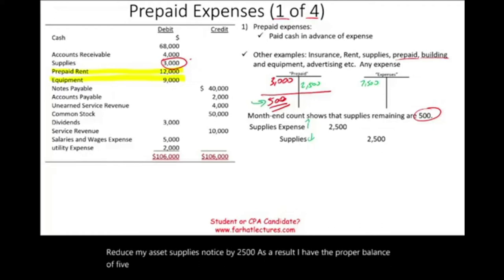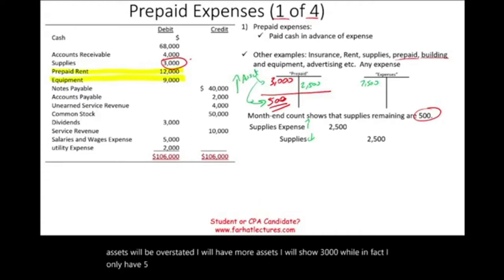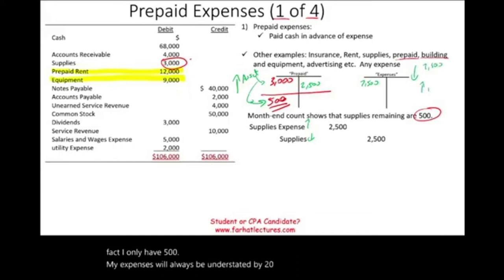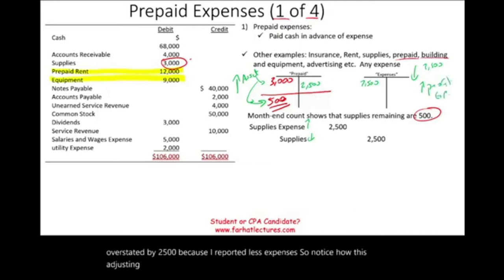What happens if we did not book this entry? Our assets would be overstated — we'd show $3,000 when we only have $500. Our expenses would be understated by $2,500, and as a result, our profit would be overstated by $2,500 because we reported less expenses. Notice how this adjusting entry affects both the balance sheet and the income statement.